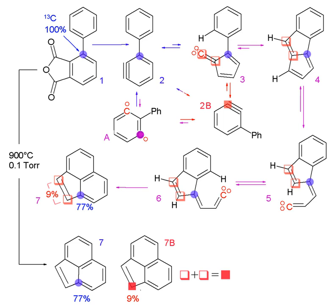The irreversible reactions provide the thermodynamic constraints needed to find the fluxes. A matrix is constructed that contains the stoichiometry of the reactions. The intracellular fluxes are estimated by using an iterative method in which simulated fluxes are plugged into the stoichiometric model. The simulated fluxes are displayed in a flux map, which shows the rate of reactants being converted to products for each reaction. In most flux maps, the thicker the arrow, the larger the flux value of the reaction.